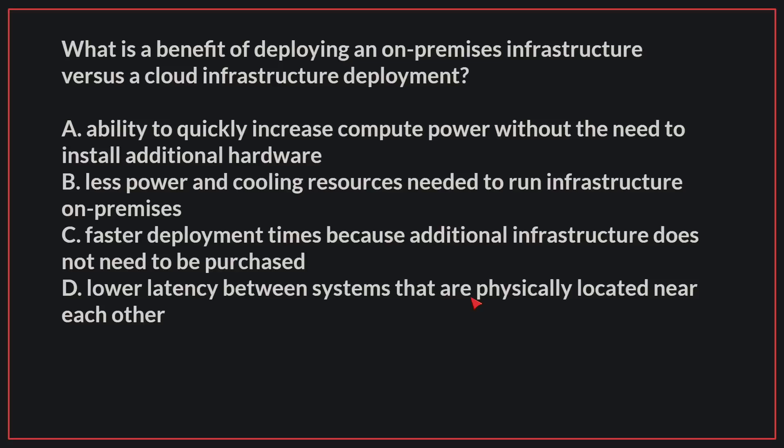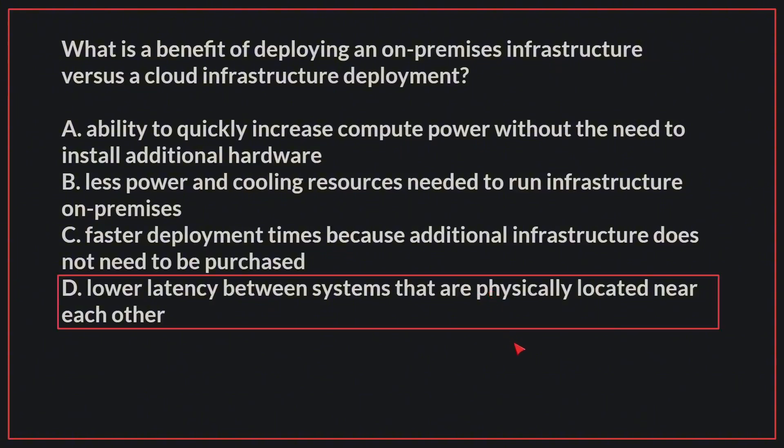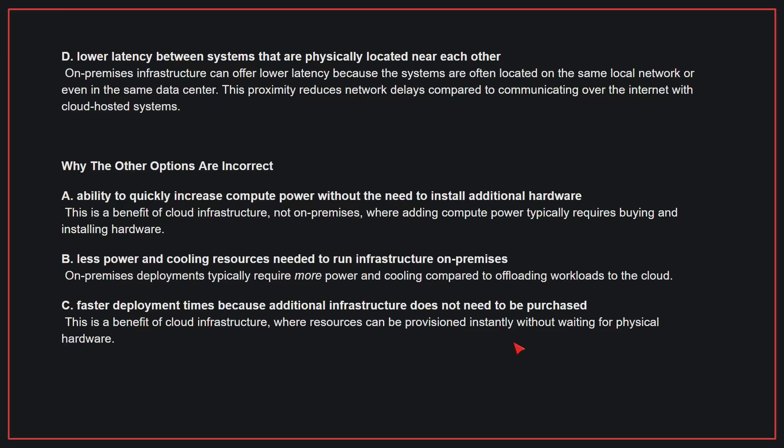What is the benefit of deploying an on-premises infrastructure versus a cloud infrastructure deployment? The correct answer is D. On-premises infrastructure can offer lower latency because the systems are often located on the same local network or even in the same data center. This proximity reduces network delays compared to communicating over the internet with cloud-hosted systems.